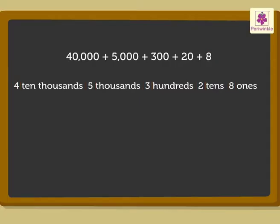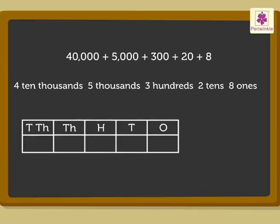Now, let us write the digits in the place value chart. That is 4 in the ten thousands place, 5 in the thousands place, 3 in the hundreds place, 2 in the tens place and lastly 8 in the ones place.